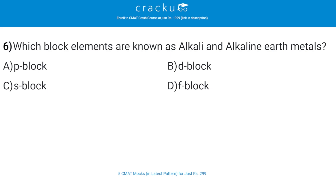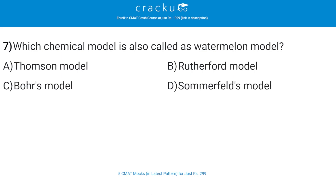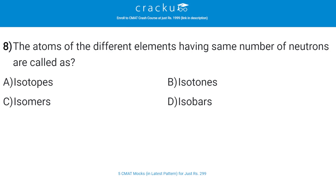Which block elements are known as alkali and alkaline earth metals? The correct answer is C — s-block. The next question: which chemical model is also called the watermelon model? The correct answer is A — the Thomson model.